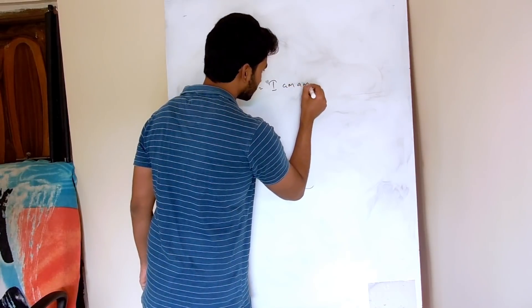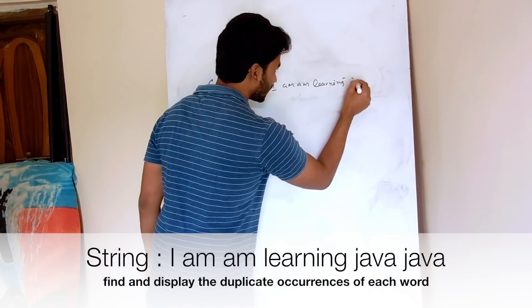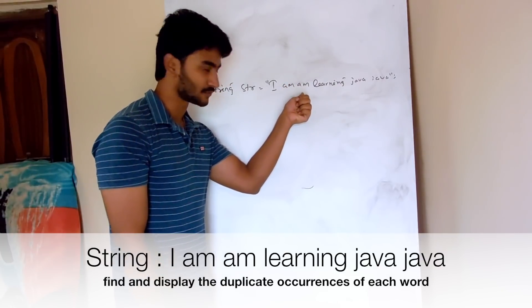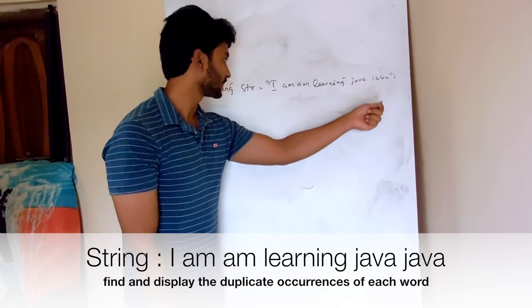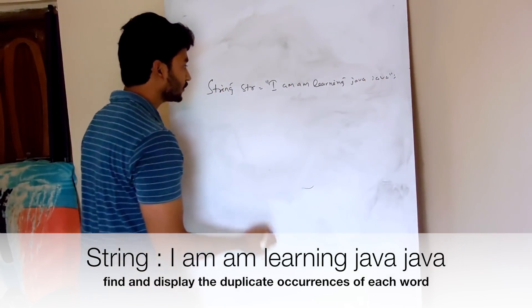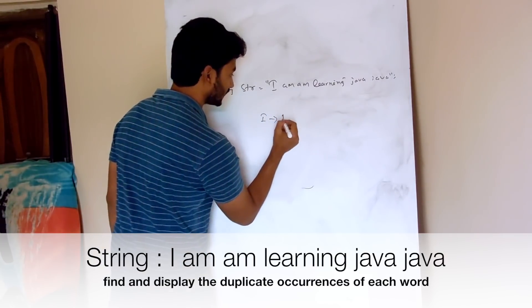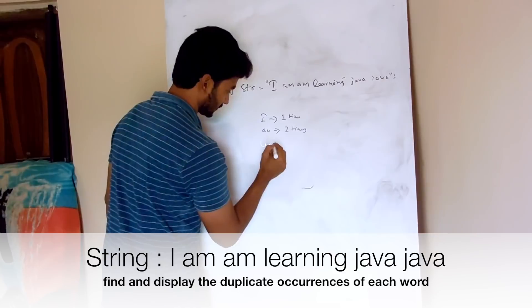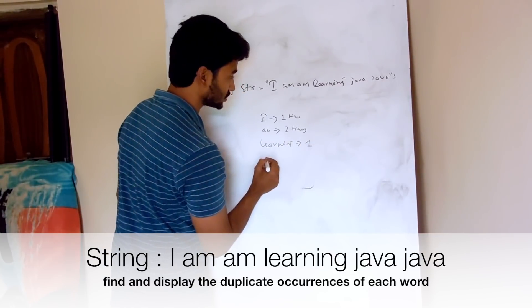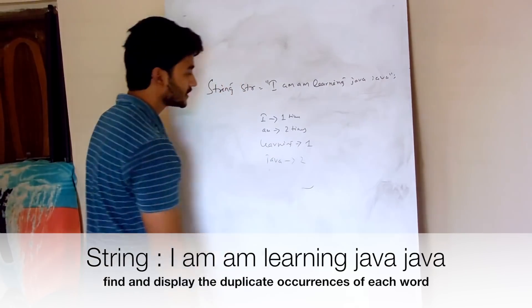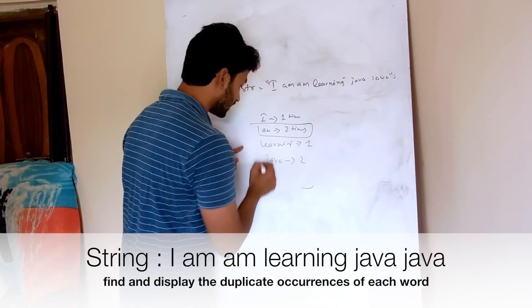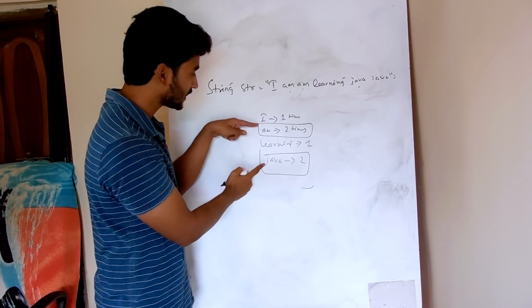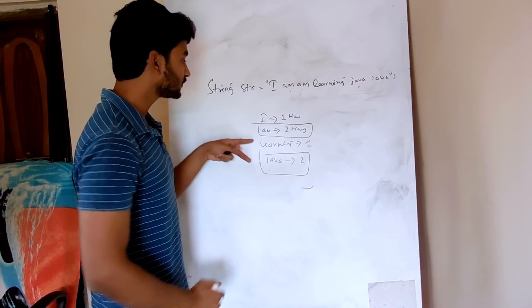First, they'll give you a string like: 'i m m learning java java'. You can see there are a few words appearing multiple times - 'm' and 'java' are occurring multiple times. 'i' occurs one time, 'm' occurs two times, 'learning' occurs one time, and 'java' occurs two times. So you need to display only 'm' and 'java' because they are the duplicates.